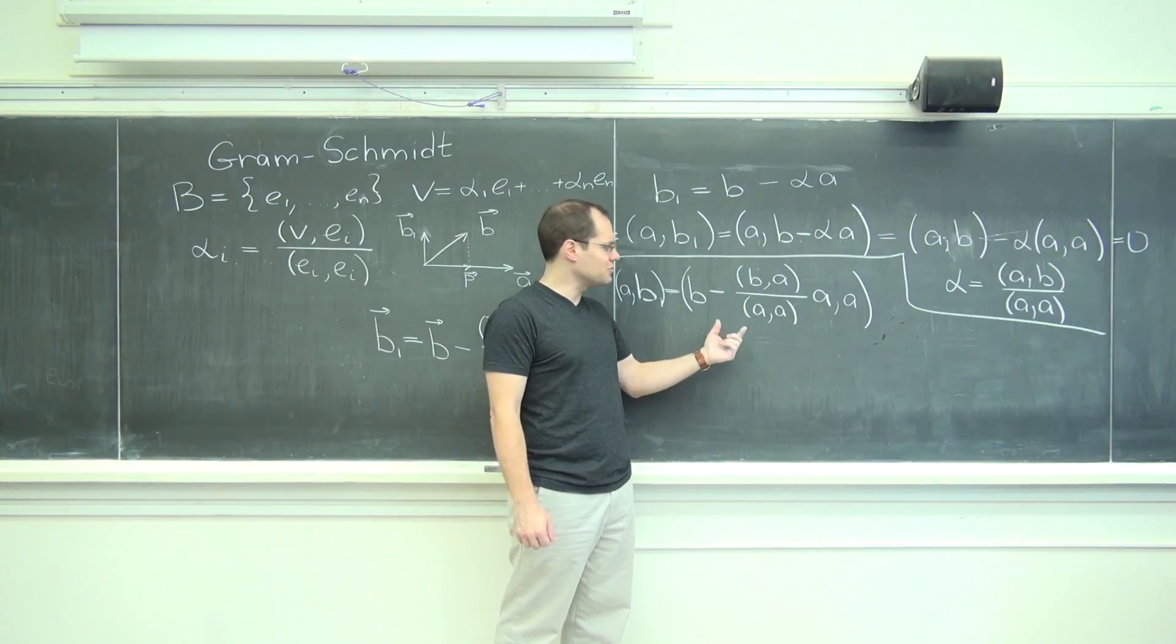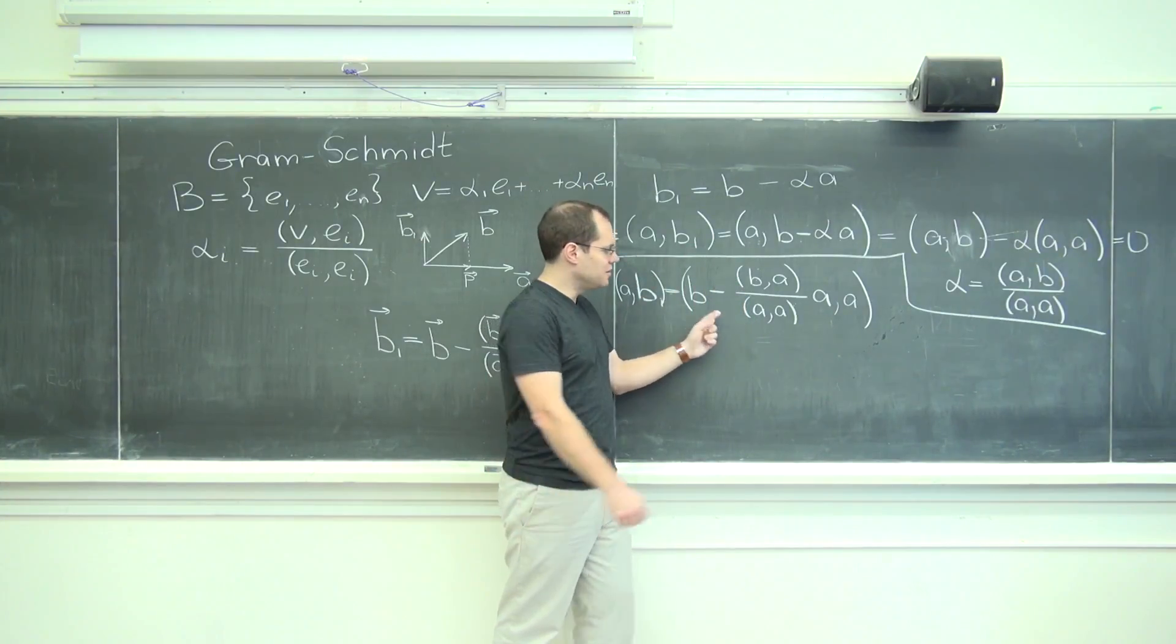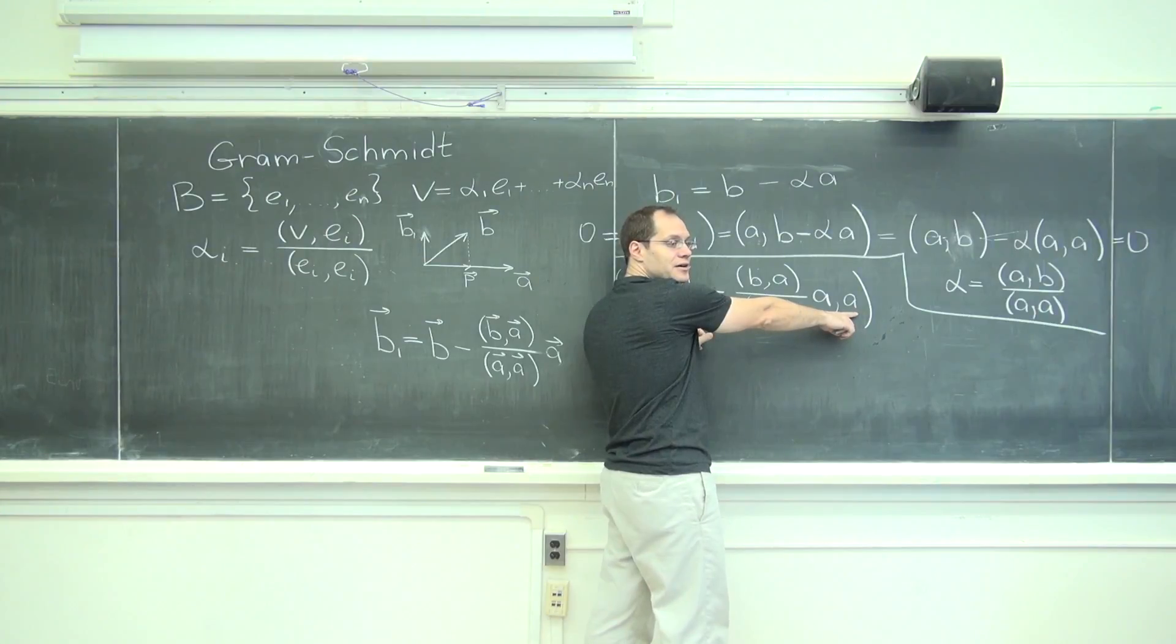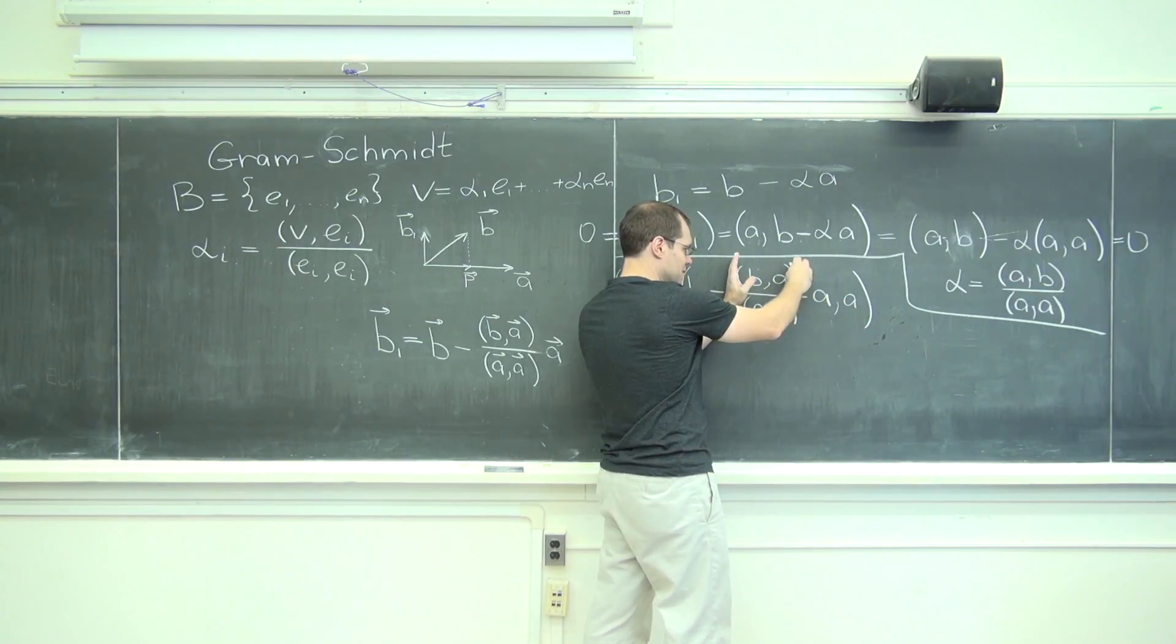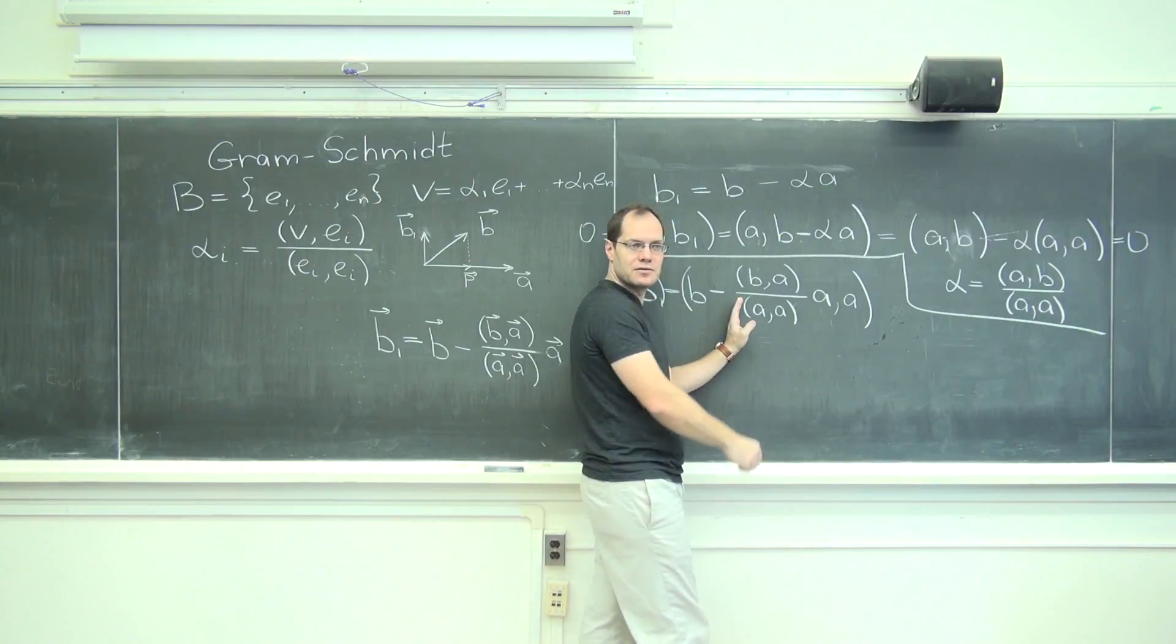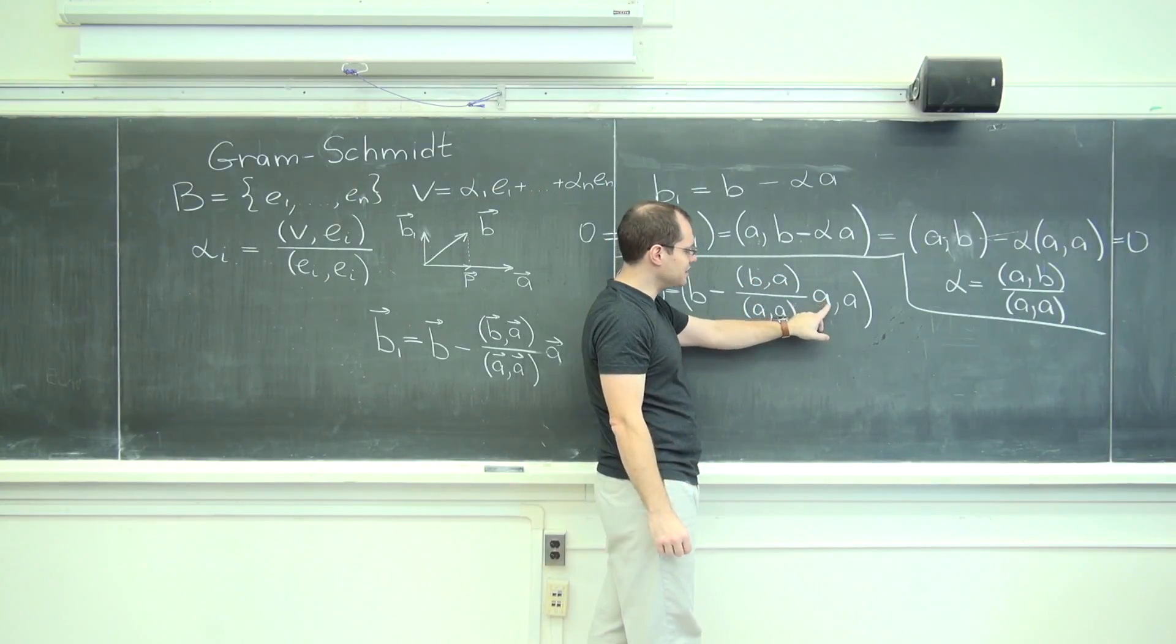Let's see what happens here. We'll use the distributive law. We're going to do it in our heads, we're not going to write anything down. And we'll have a dot b, right? Minus, remember this looks messy but it's just a number. Minus this number times a dot a.